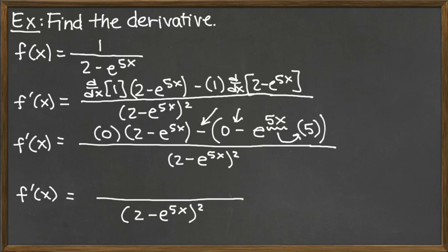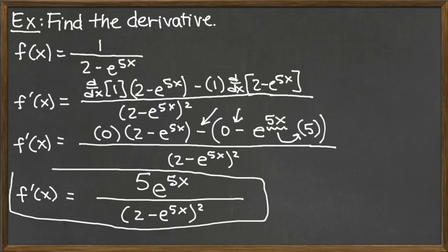And so we are looking at the e to the 5X and then we have times that constant 5, which I'm just going to bring up to the front there. And so that would be our final derivative using the quotient rule.